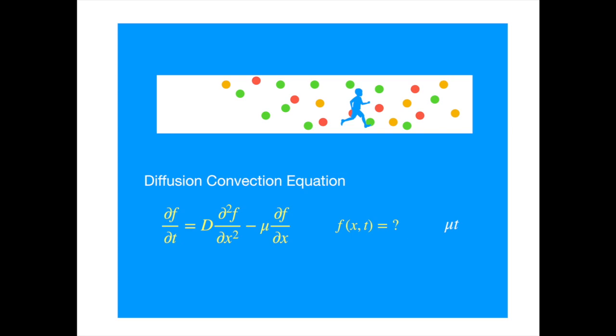So if we introduce a variable transformation to reflect this, we will get the diffusion equation, which we know how to solve and we can then transform the solution back into our problem.